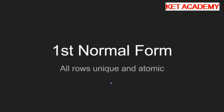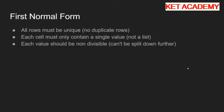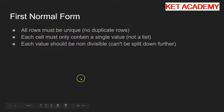First normal form - this one is nice and simple. All rows must be unique and all cells must contain atomic values. Each row in the table must be unique, so there cannot be any duplicate rows. You can't have two different rows where all of the data contained within those rows is identical. And each cell must only contain a single value - you can't have a cell that has a list of values.